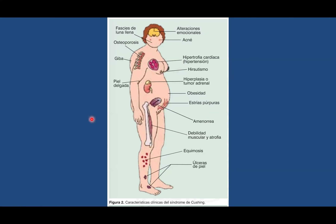Las características incluyen la giba en el cuello, la cara de luna llena, el hirsutismo, la hipertrofia cardíaca producida por la hipertensión arterial, una hiperplasia o tumor adrenal dependiendo si es dependiente o independiente, la obesidad, las estrías purpúricas, y una disminución de la masa muscular con equimosis y lesiones ulcerativas en la piel.